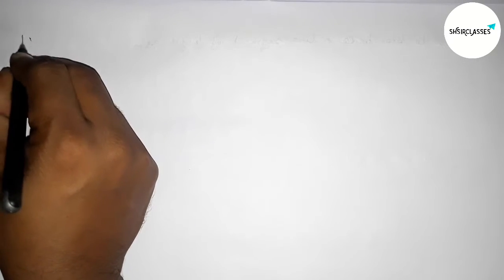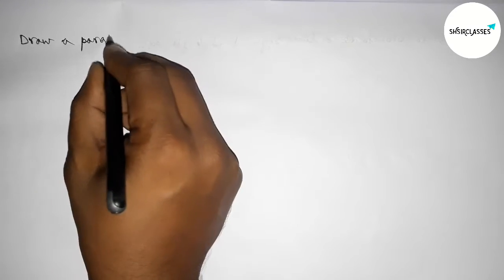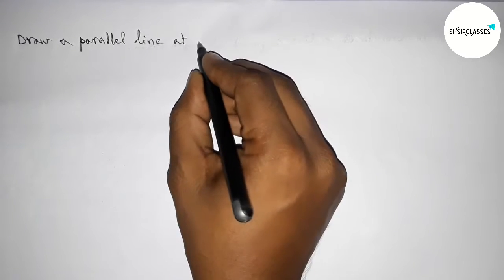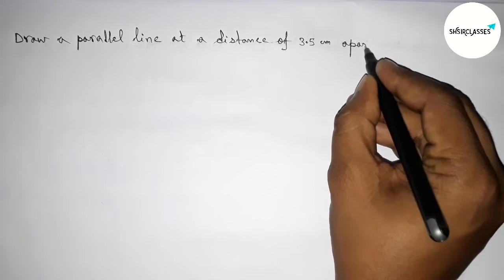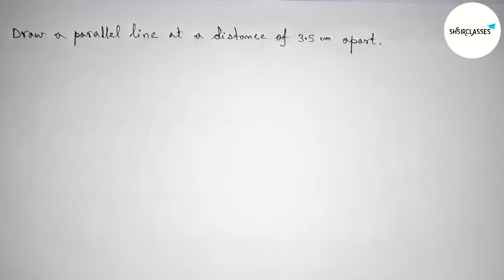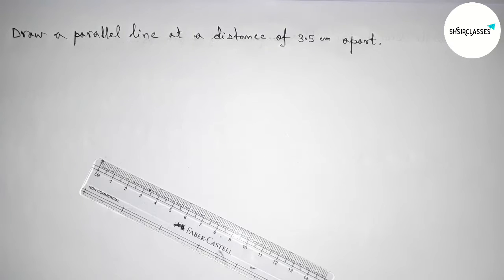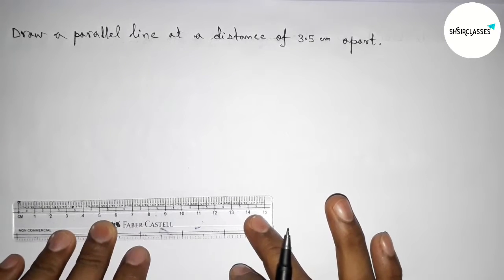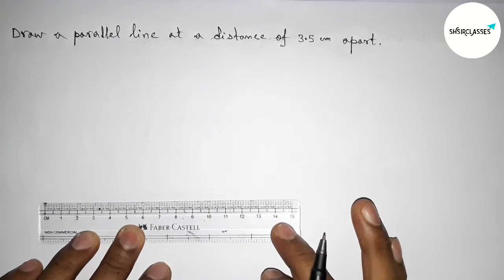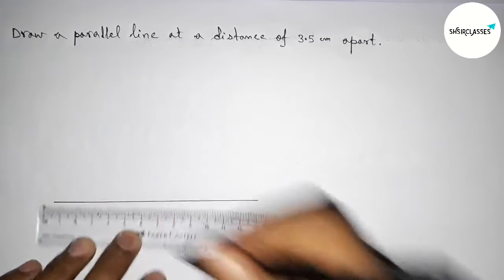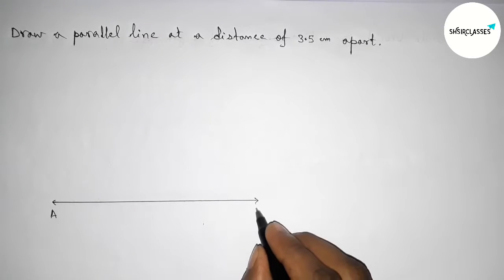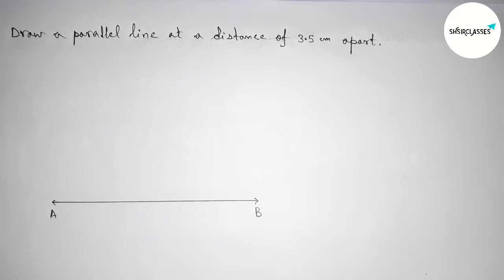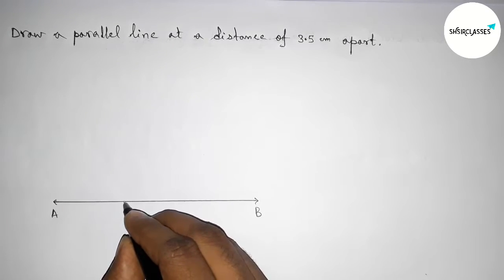Welcome to Essay Share Classes. Today in this video we have to draw a parallel line at a distance of 3.5 centimeters. Let's start the video. First, with the help of a scale, we have to draw a line segment of any length. I'm going to draw a line segment with arrow marks on both sides, labeling this end A and this end B.